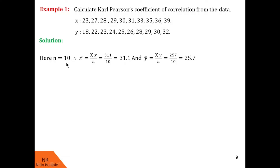Using n=10, we can now find the average of x and y. The mean of x, denoted x bar, is summation of x upon n. Summation of x means the sum of all values of x — that is 23 plus 27 plus 28 and so on up to 39 — whole divided by 10. So x bar is 311 upon 10, that is 31.1. Similarly, y bar is summation y upon n and we found it is equal to 25.7.